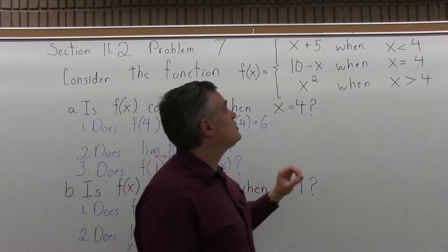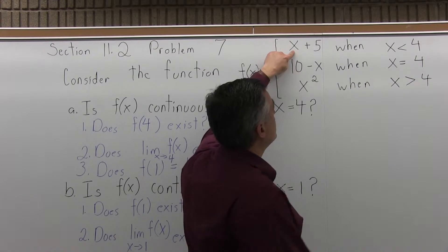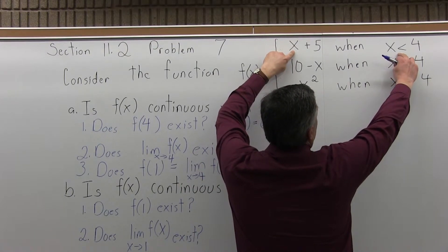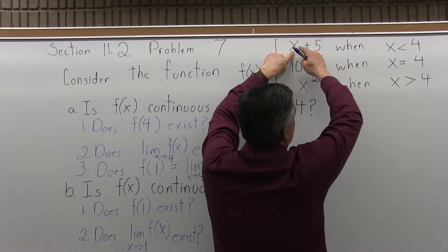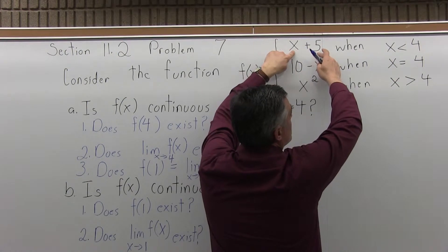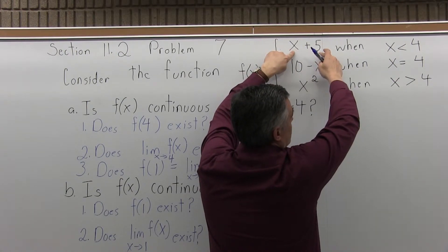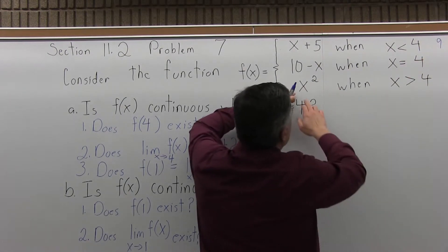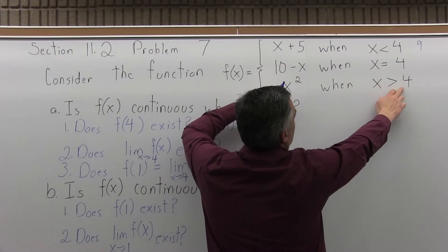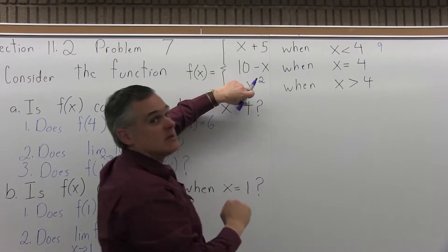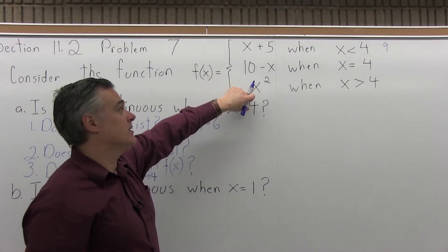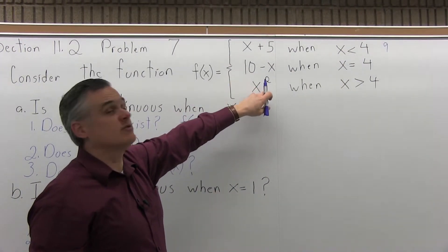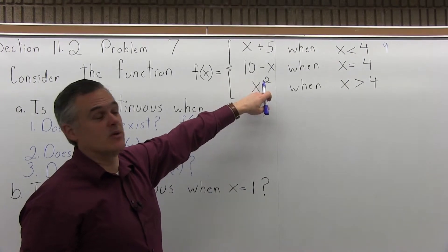As I start putting in values super close to 4 that are slightly smaller, like 3.999, the output gets very close to 4 plus 5, so it's getting close to 9. Now as I put in values that are slightly larger than 4, like 4.001, the output gets very close to 4 to the 2nd power, or 16.